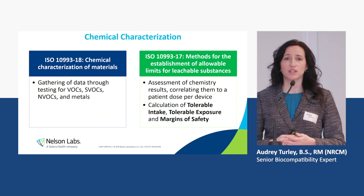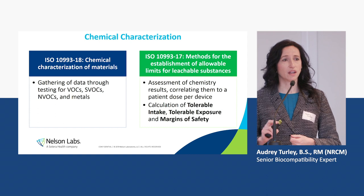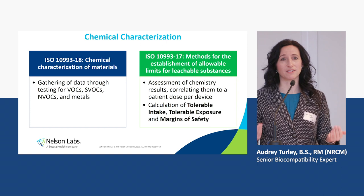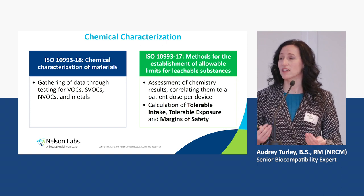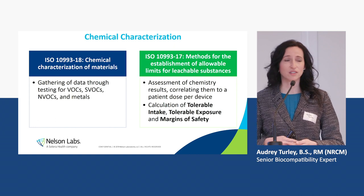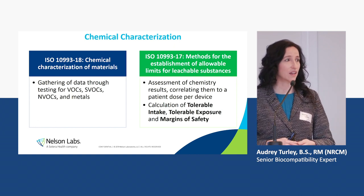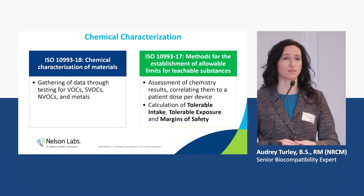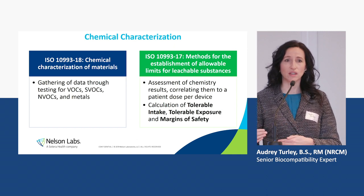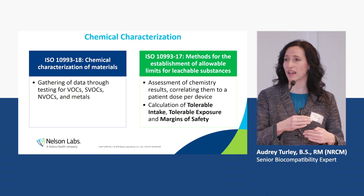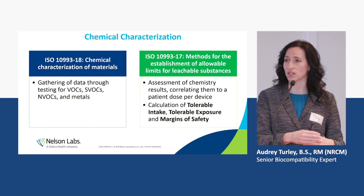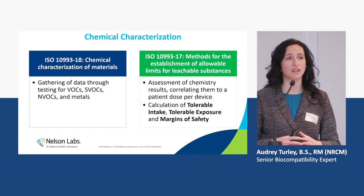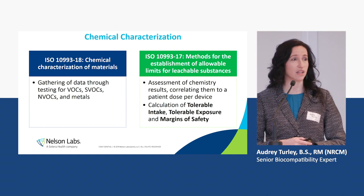For chemical characterization, there are really two phases. The chemical characterization testing itself occurs under 10993 Part 18 — that is Nelson Labs Europe's area of expertise. However, that data then has to be analyzed through a toxicological risk assessment, because we need to take the chemistry detected on the device and correlate it to patient use and patient exposure through research done by toxicologists and calculations under 10993 Part 17.